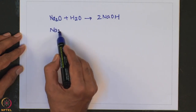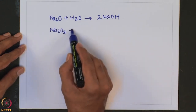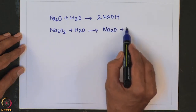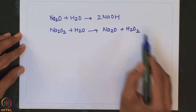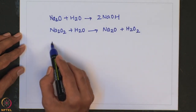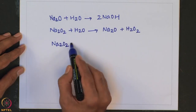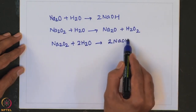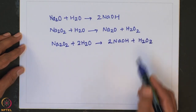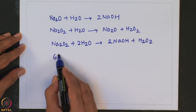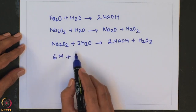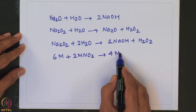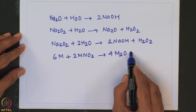Similarly, if you take sodium peroxide it reacts with one equivalent of water to form initially sodium oxide plus H2O2, and then if it is reacted with two equivalents of water it forms 2NaOH plus H2O2. Similarly, a metal reacts with metal nitrate to form the corresponding metal oxide plus N2 is liberated.